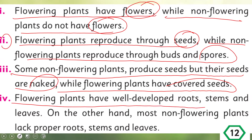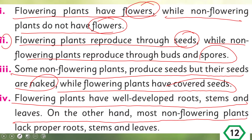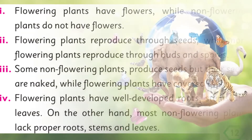Flowering plants have well-developed roots, stems, and leaves. On the other hand, most non-flowering plants lack a proper root system and leaves. So the fourth difference is that some non-flowering plants do not have proper leaf, stem, and root structure, whereas all flowering plants have a developed root, stem, and leaf structure.